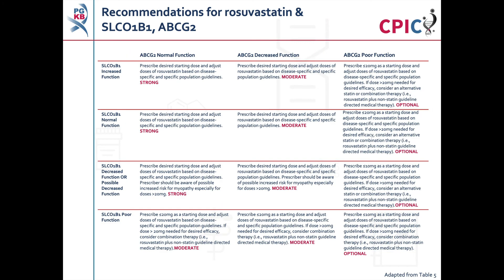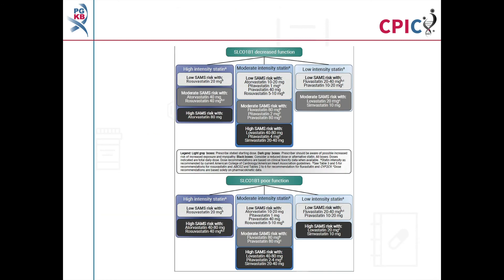Table 5 in the guideline publication gives recommendations for rosuvastatin and combined SLC01B1 and ABCG2 phenotypes. Figure 1 in the guideline publication gives an overview of the recommendations with statin intensity and dose stratified by SLCO1B1 phenotype, and can be used to guide the selection of an alternative statin.